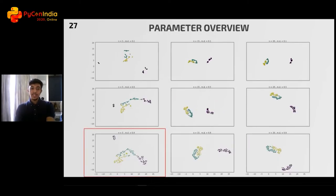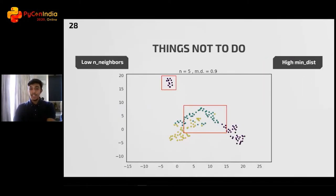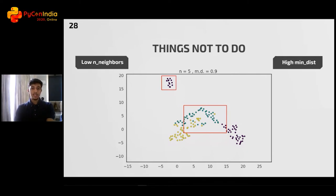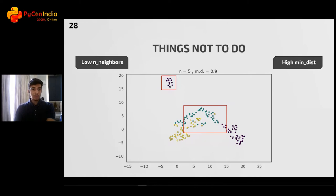Here is something we should not do: a low number of neighbors combined with a very high minimum distance value is not what we want — we would essentially be ruining our output. The extreme focus on local structures makes us lose sight of how a single cluster is placed. The purple cluster gets pulled apart from the rest of the purple points, and high values of min_dist make the data sparser, forming a kind of meaningless spread of points. Note that these sorts of values could be useful for a particular dataset of, say, 50 points, where five n_neighbors represent 10% of the total data. But as the total number of points increases, n_neighbors should represent a significant similarity, and in this case the output totally goes against what we are trying to do.